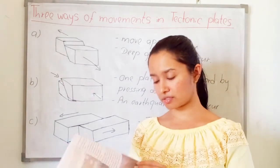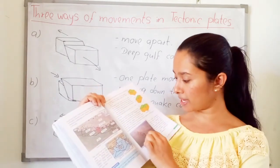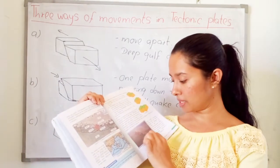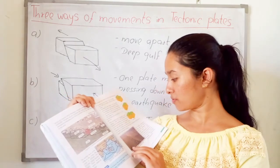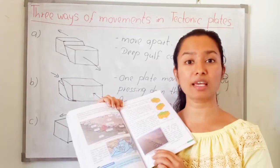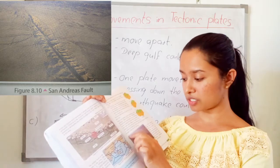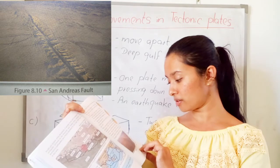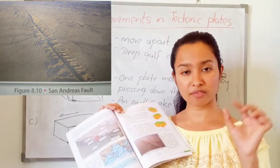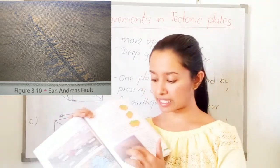Turn to page number 111. You can see a plate margin located in North America. It is known as the San Andreas Fault — a margin visible in an aerial view, with a length of 1000 km. This plate margin occurs between the North American plate and the Pacific plate. These two plates slide past each other about 2.5 cm per year, and earthquakes occur frequently in this area.